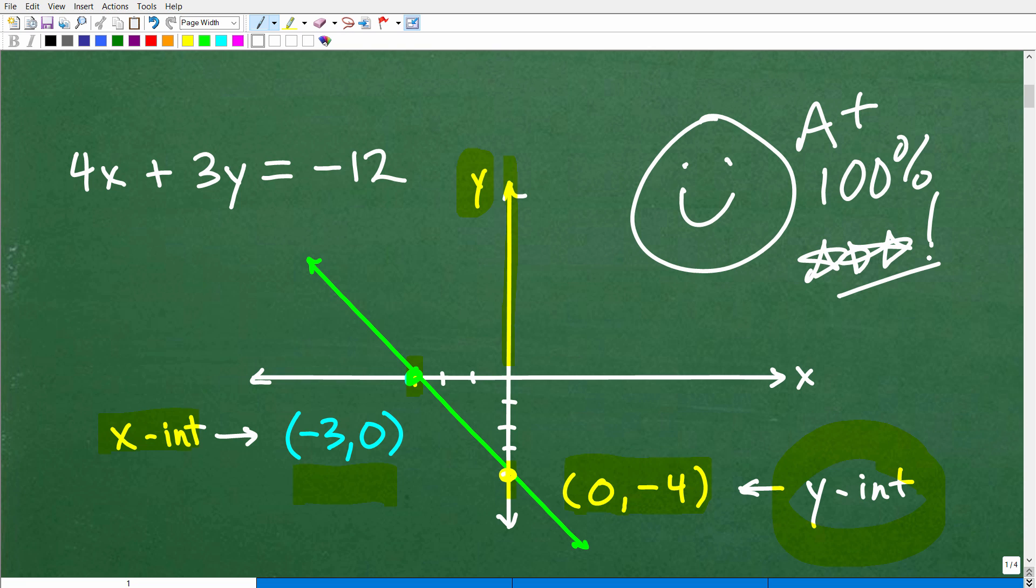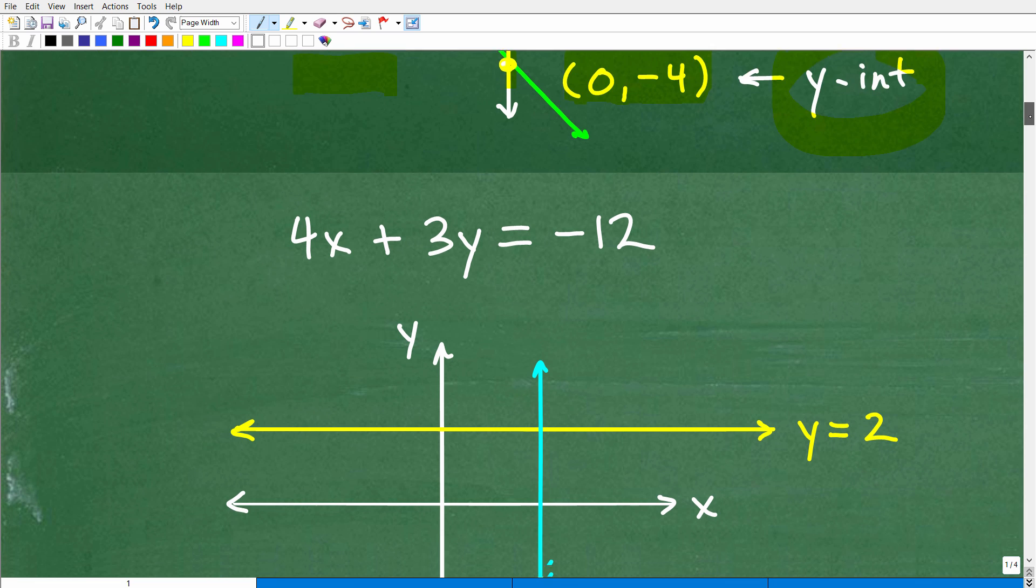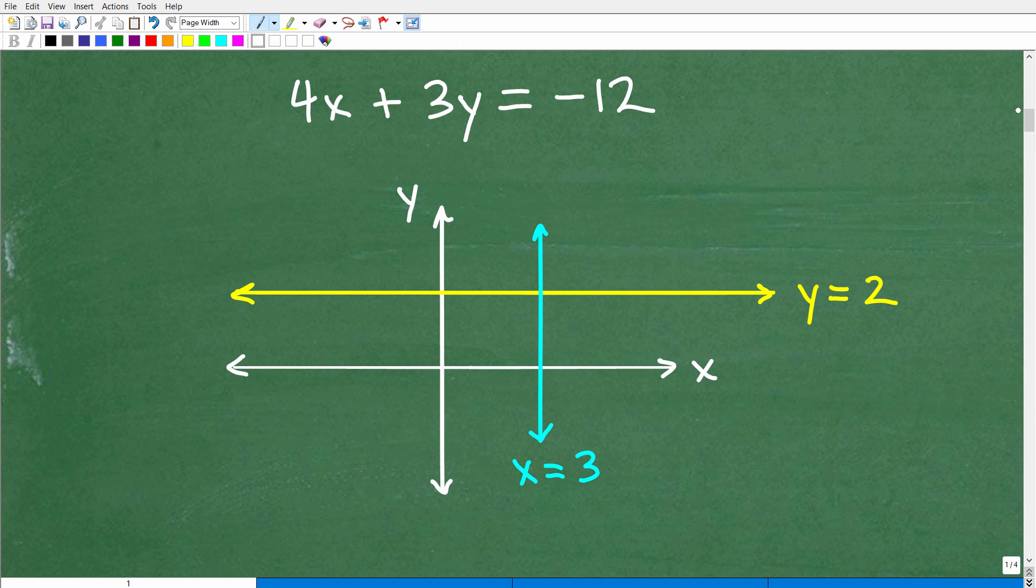So let's go ahead and talk about kind of what the topic is, and that is graphing lines in algebra. This is kind of like pre-algebra, first-year algebra stuff. But let's first start off by looking at the situation. Here is an equation. This is a linear equation, and this equation has two variables, x and y. So we would call this a two-variable linear equation. That's a good kind of description of this. It's an equation of a line.